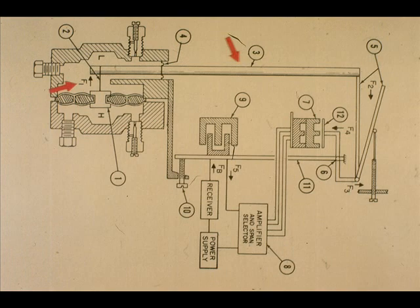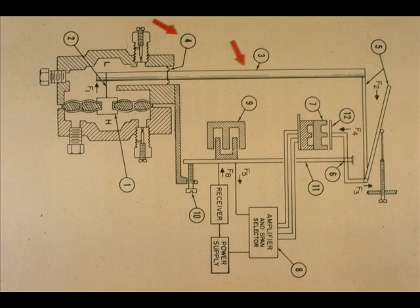The force bar will move in the direction shown by arrow F1 at the bottom of the force bar 3. The force bar 3 will pivot about the diaphragm seal 4.